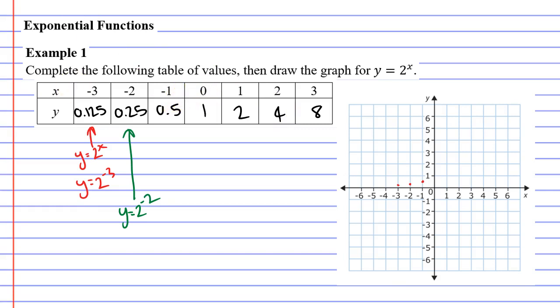So when x is 0, y is 1. When x is 1, y is 2. When x is 2, y is 4. And when x is 3, y is 8. Which is going to go past our Cartesian plane here.